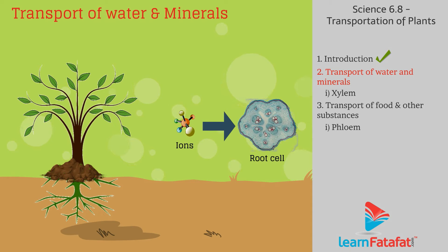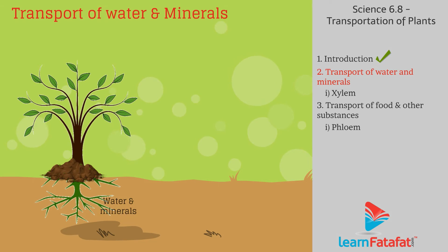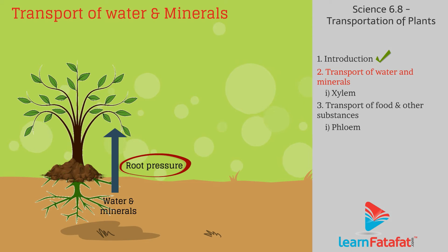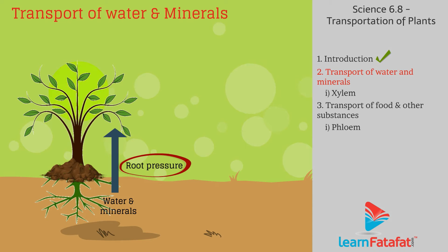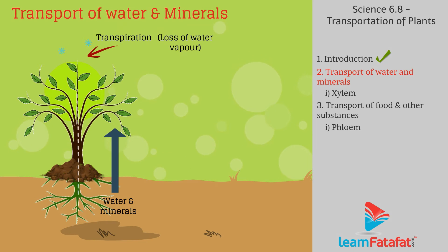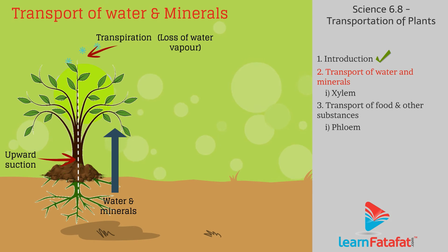The ionic concentration inside the roots is higher than outside, so to absorb ions from lower concentration to higher concentration, root cells require energy. Water and minerals collected in roots undergo steady upward pressure called root pressure, with which water moves to upper body parts. However, this pressure is insufficient to move water to higher body parts, so the loss of water in the form of vapors through the upper body parts, called transpiration, aids this process.